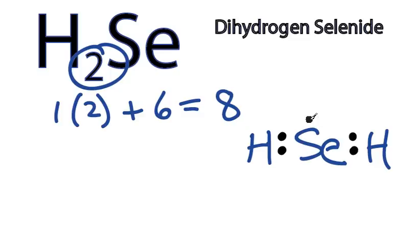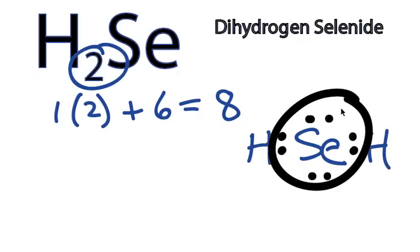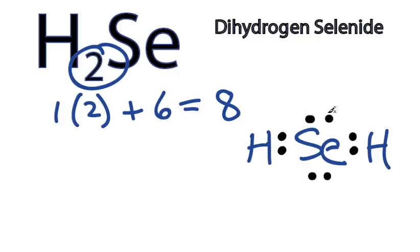We have 4 more. Let's put them right here. And that means that Se has 8, so it's good. Its outer shell is full as well. So that's the Lewis structure for H2Se.